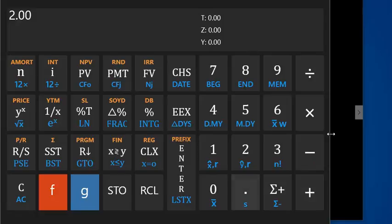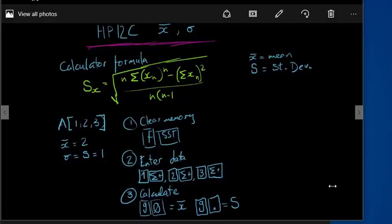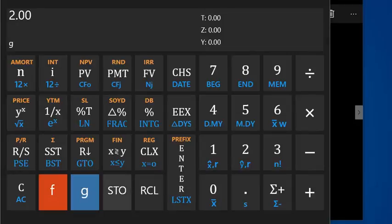And the standard deviation, so if we put the blue function and the dot, we get this s here. So g dot equals standard deviation. The standard deviation is equal to 1.